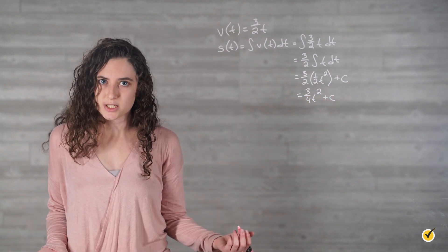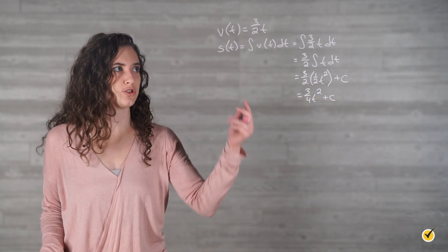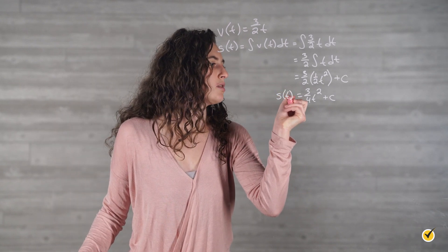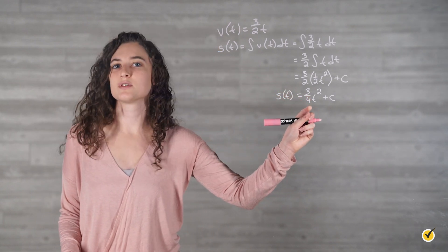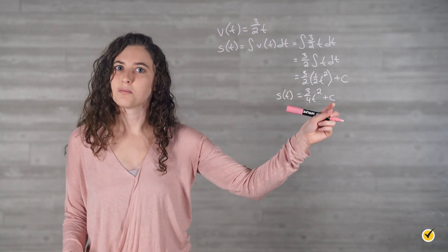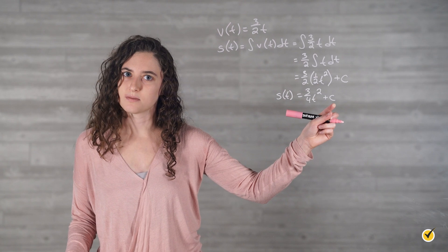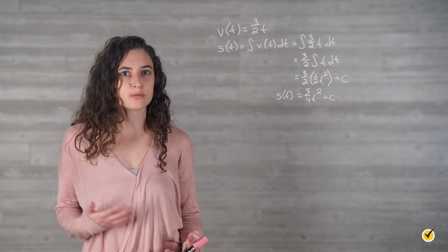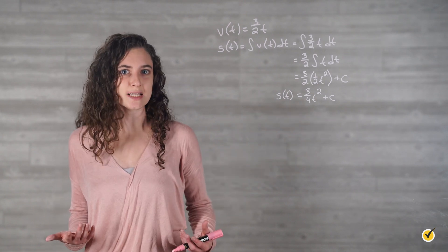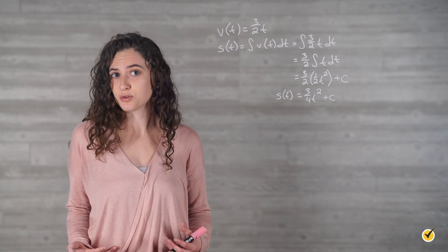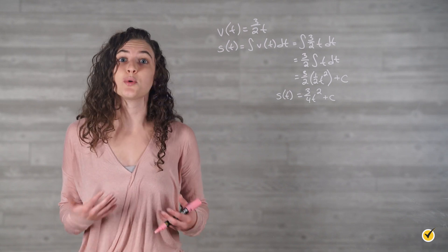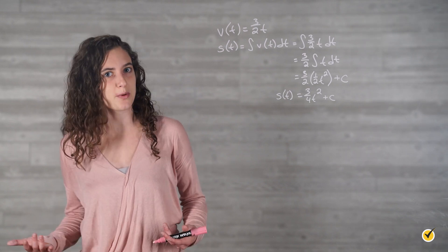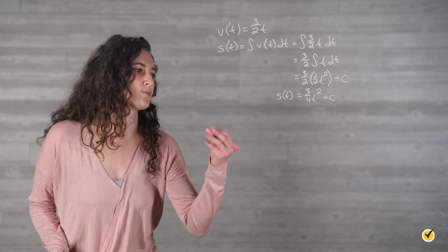So the tire's position function, which is usually called s(t), is equal to (3/4)t squared plus a constant. If we wanted to find out how far the tire rolled from t = 1 second to t = 3 seconds, we would use a definite integral with an upper bound of 3 and a lower bound of 1.